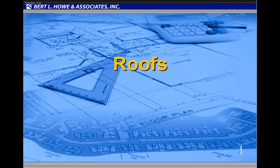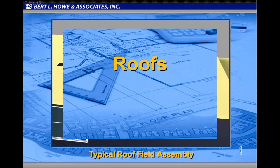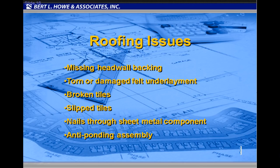Typical roofing issues include missing headwall backing, torn or damaged felt underlayment, broken tiles, slipped tiles, nails through sheet metal flashings or other components, and missing or improperly installed anti-ponding assemblies.